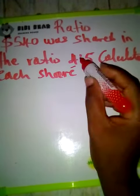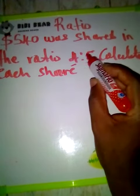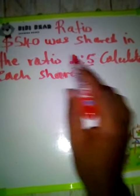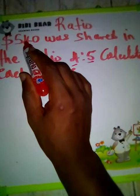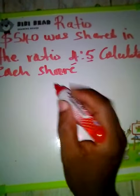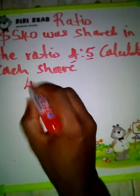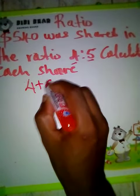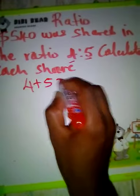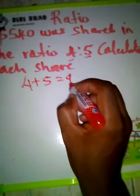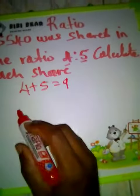Normally a teacher would just add the ratio parts without explaining why. The reason we add them is because all the shares must equal the total, so we need to know the total shares: 4 plus 5 equals 9.